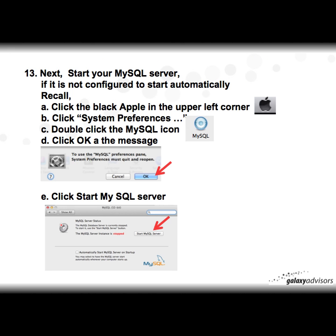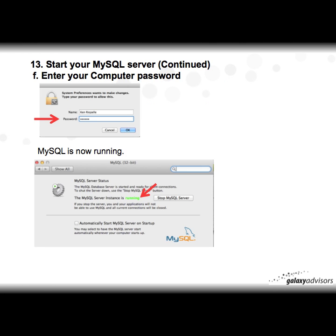Next you want to start it, but first make sure your MySQL server is running. If it's not configured to start automatically, click the black Apple in the upper left corner, click System Preferences, then click the MySQL icon. Click OK at the message you get, then in the next window click 'Start MySQL Server'. You'll be prompted to enter your computer password — enter it and click OK. MySQL is running when you see a green indicator saying 'MySQL server instance is running'.